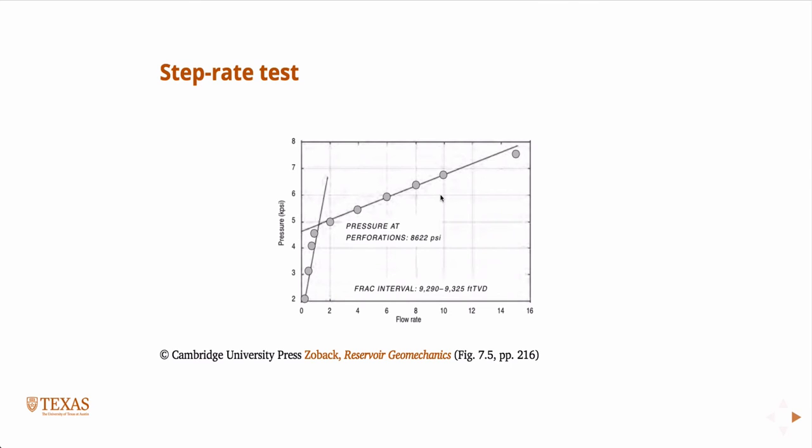You'll end up with a curve that looks like this. You'll see a very distinct transition if you plot two piecewise linear straight lines through the data. You'll see a very distinct change in slope, and at the pressure at which these two lines meet, this pressure is going to be your S3, your minimum principal stress.